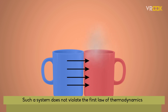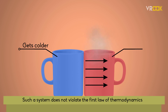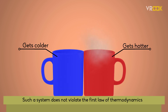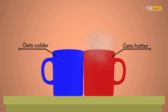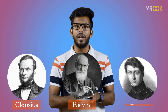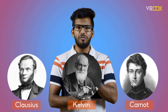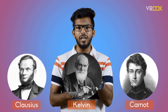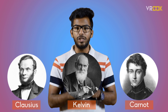The cold object gets colder and the hot object gets hotter, but energy is conserved. Obviously we don't encounter such a system in nature. So to explain this and similar observations, physicists proposed a second law of thermodynamics. Clausius, Kelvin, and Carnot proposed various forms of the second law to describe the particular physics problem that each was studying.